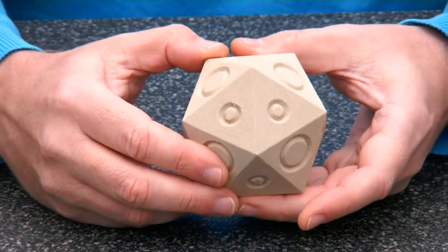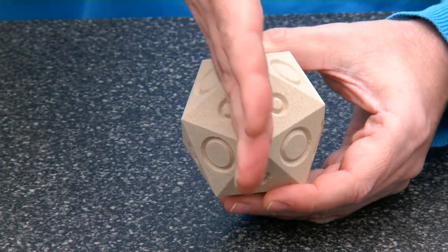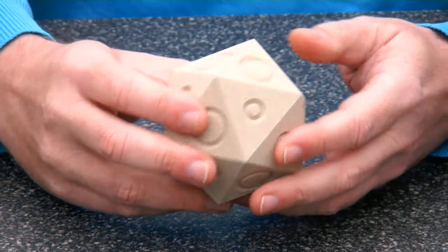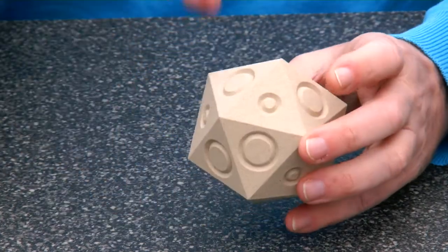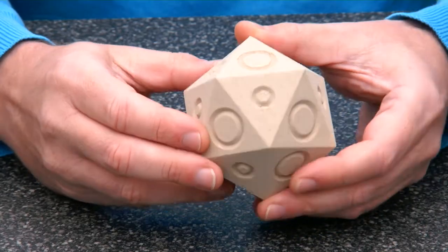When you look you see a lot of local symmetries. So it looks like there is a mirror symmetry around this axis. But if we look at the other side you see that it's actually not mirror symmetrical there.